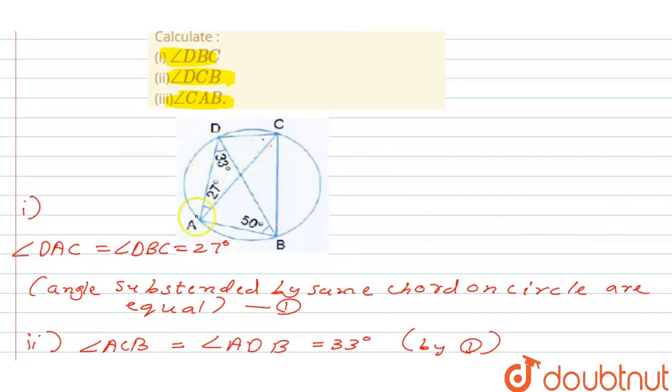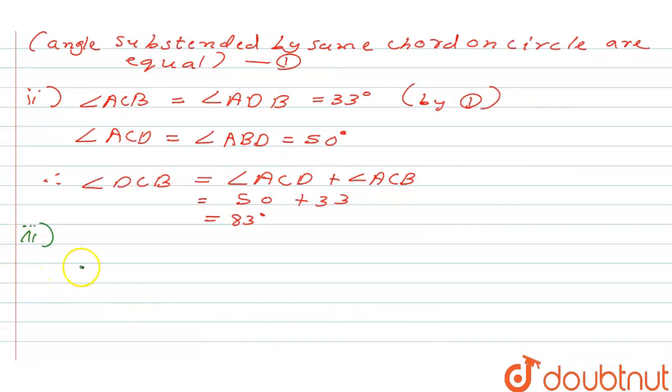So angle DAB, this angle, and angle DCB, their sum is going to be 180. So we can write angle DAB plus angle DCB is equal to 180 degrees.